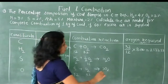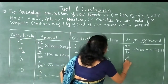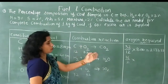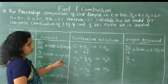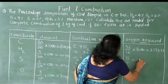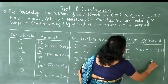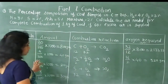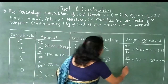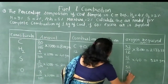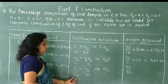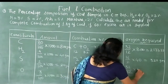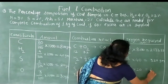For Hydrogen, oxygen required = (16/2) × 40 = 320 g. For Sulfur: (32/32) × 20 = 20 g. The multiplication factor for Sulfur is 32/32, and the amount is 20 g, giving an answer of 20 g.